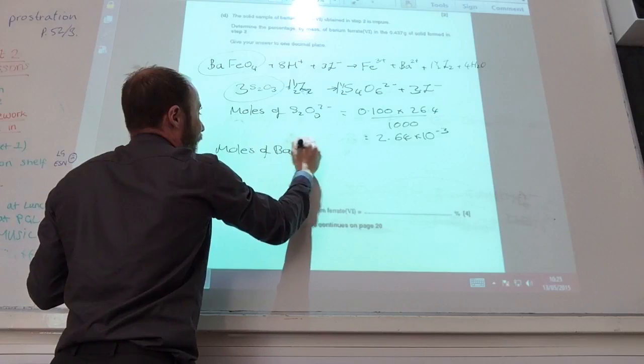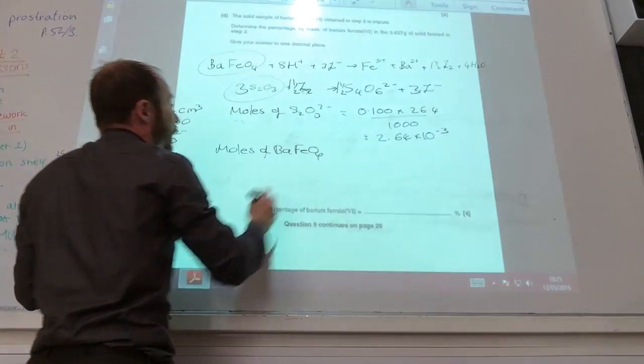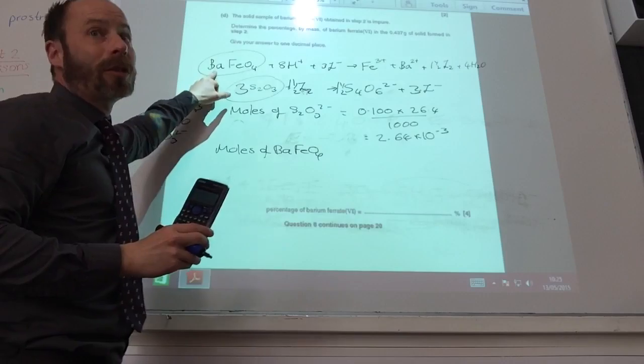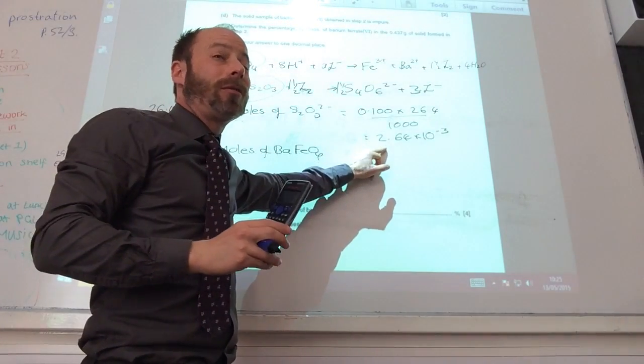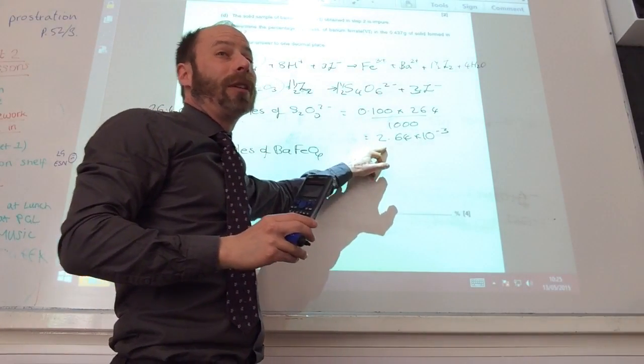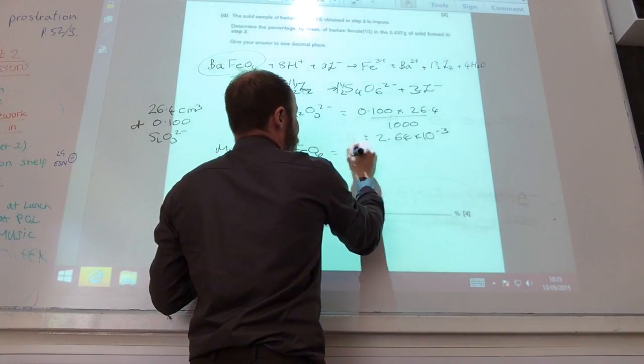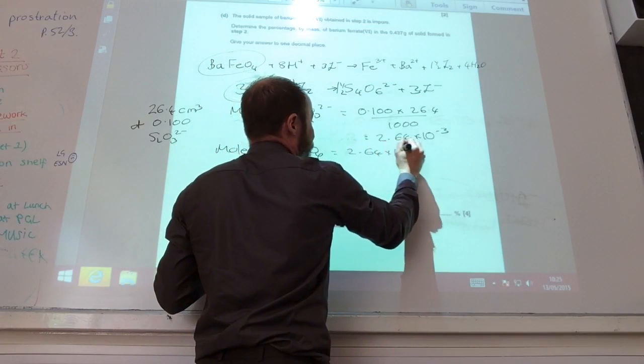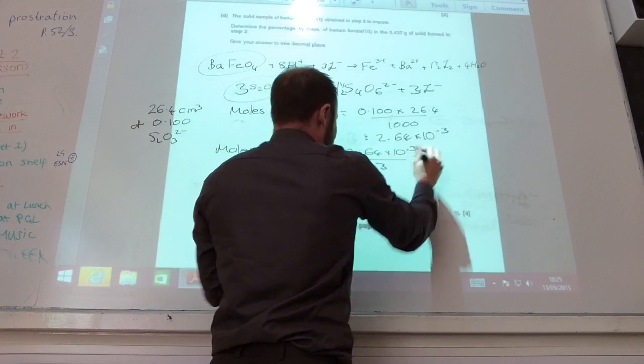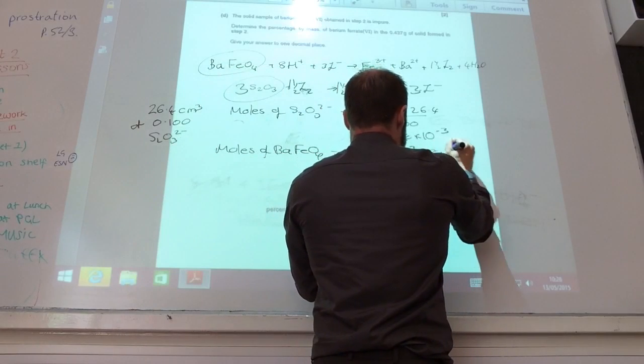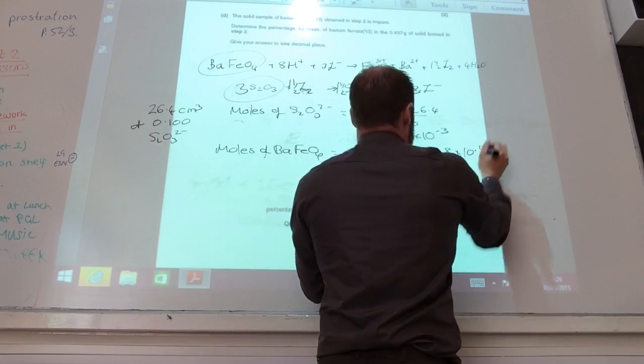Moles of BaFeO4: for every three of those, I only had one of those. I'm going to divide by three. So moles of that is 2.64 times 10 to the minus three divided by three. That gives you 8.8 times 10 to the minus four.